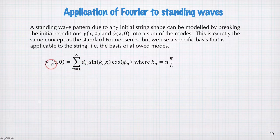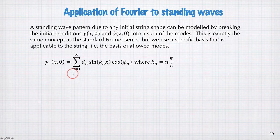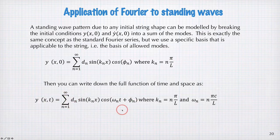So, the sum at time equal to zero would look like this. We have some amplitude d_n of these sine waves here, the spatial dependence, and time equal to zero, which has this cos(φ_n) in here. And then, to write down the full function of time and space, we add the time dependence back in, and we get this sum here.